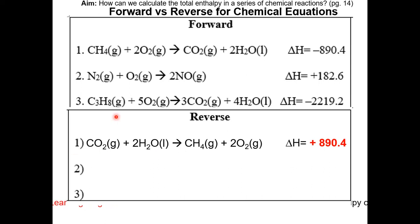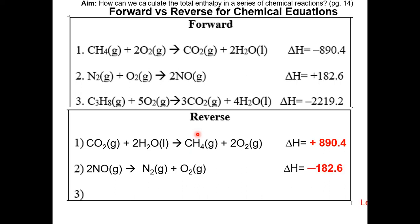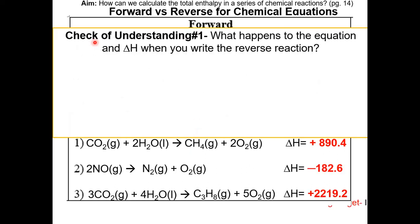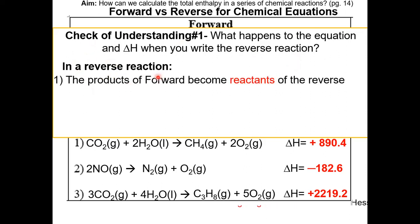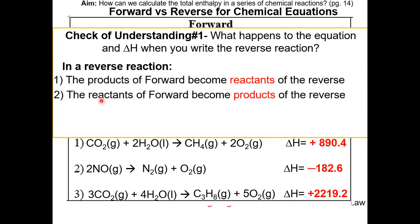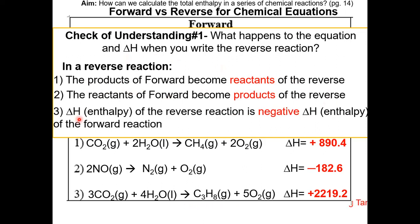Now try to write the reverse equation for numbers 2 and 3 and their delta Hs. Pause the video and resume when completed. Here are the answers. Check of understanding number 1: What happens to the equation and delta H when you write a reverse reaction? In a reverse reaction, the products of the forward become the reactants of the reverse, the reactants of the forward become the products of the reverse, and the delta H of the reverse reaction is the negative delta H of the forward reaction.